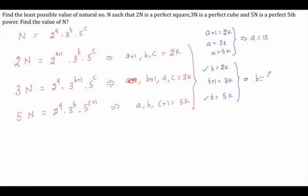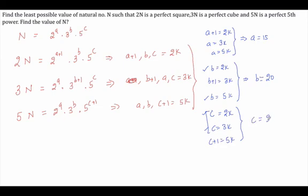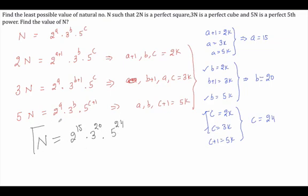Similarly for c: c must be a multiple of 2, c must be a multiple of 3, and c+1 must be a multiple of 5. So c must be a multiple of 6. Checking: 6+1=7 (no), 12+1=13 (no), 18+1=19 (no), 24+1=25 which is a multiple of 5. So c = 24. Combining all three, the smallest value of n is 2 raised to power 15, into 3 raised to power 20, into 5 raised to power 24. This is the correct answer.